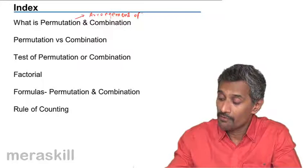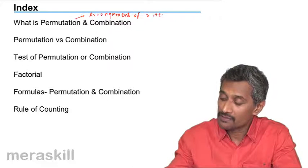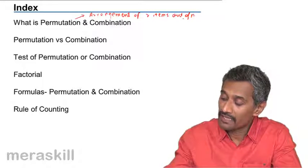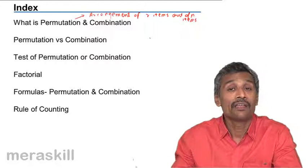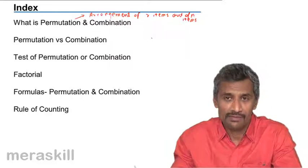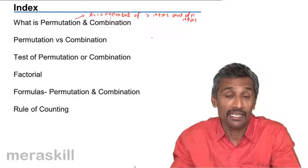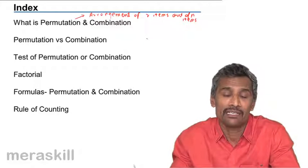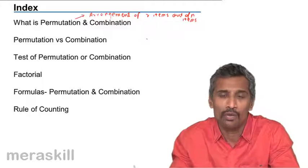Arrangement of R items out of N items. For example, out of the five vowels A, E, I, O, U, you are selecting any two. You could select A and E, or E and I, O and U, A and U - any two out of the five vowels.